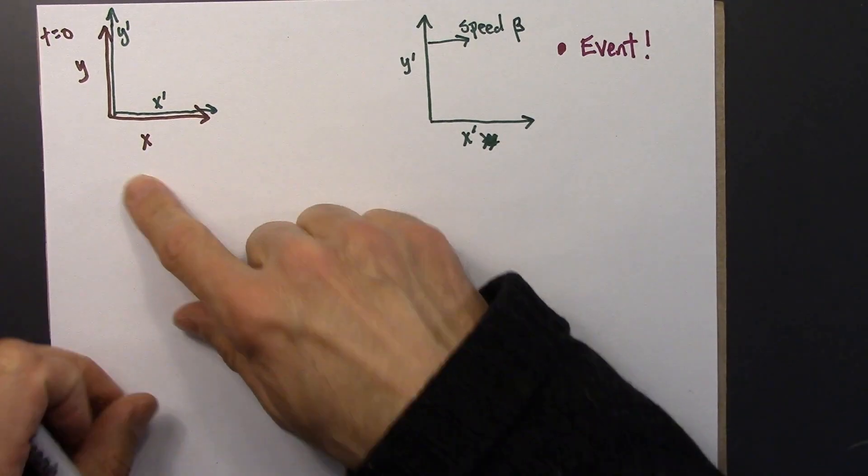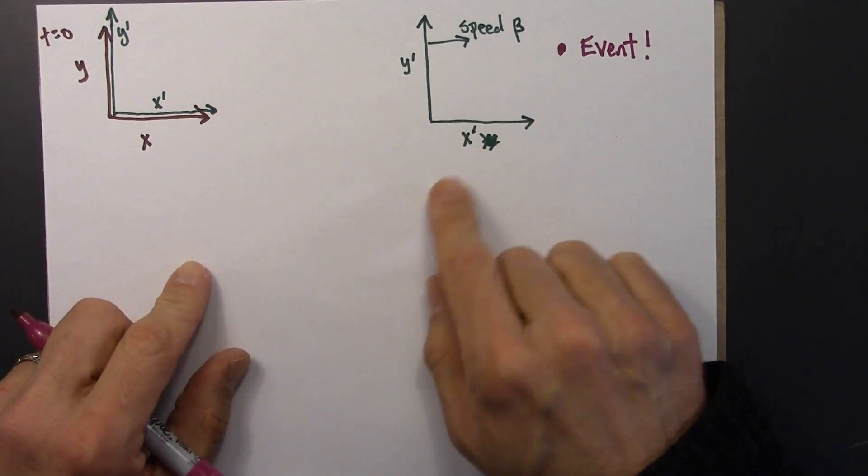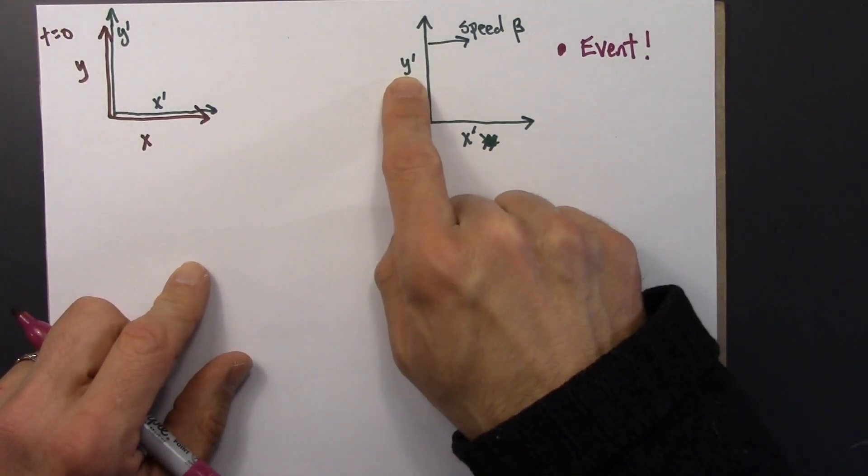In other words, what are the space-time coordinates in terms of x and y, and in terms of x prime, and in terms of y prime?